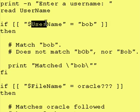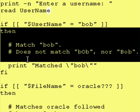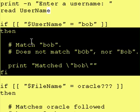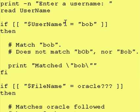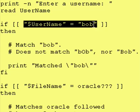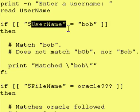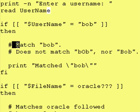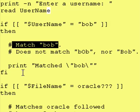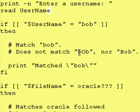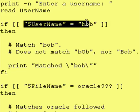Now, if the value within user name is lowercase b, lowercase o, lowercase b, then we get inside of the then construct — the then part of the if-then construct. So this test is true if the value inside of user name is B-O-B. It matches B-O-B. It doesn't match lowercase b, capital O, lowercase b, nor does it match capital B, lowercase o, lowercase b. These string tests are case sensitive.